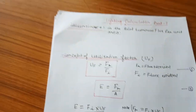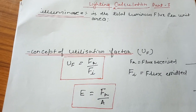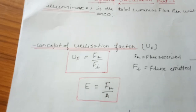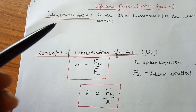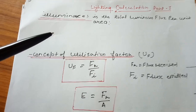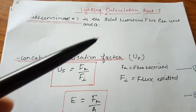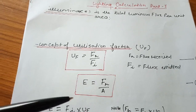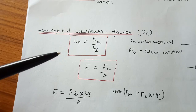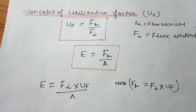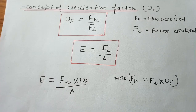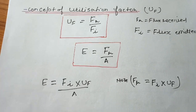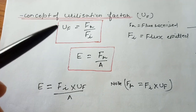Welcome to this video on lighting calculations. We will start with the different terms and components for lighting calculations. First, we'll discuss illuminance. Illuminance is the total luminous flux per unit area. To calculate illuminance, we use the utilization factor. The utilization factor is equal to flux received divided by flux emitted by the luminary.